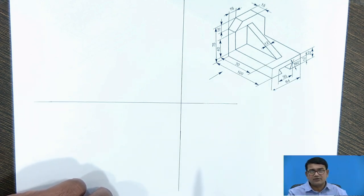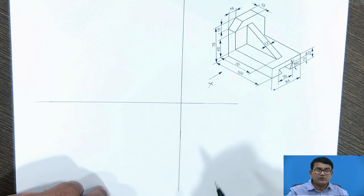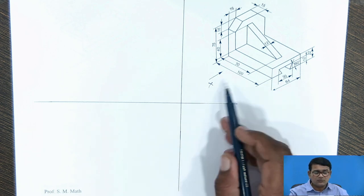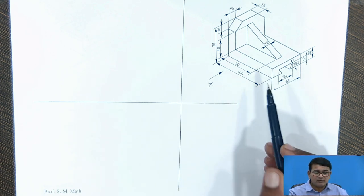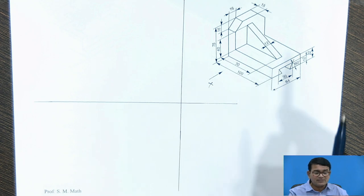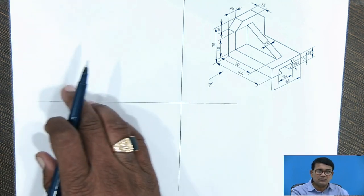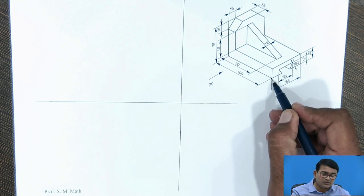A simple object is placed in front of you and there is an arrow. In the direction of arrow X, you have to draw the front view. To draw the front view, check which planes in that direction of X are parallel to you, and first check the maximum dimensions to get a rough idea.